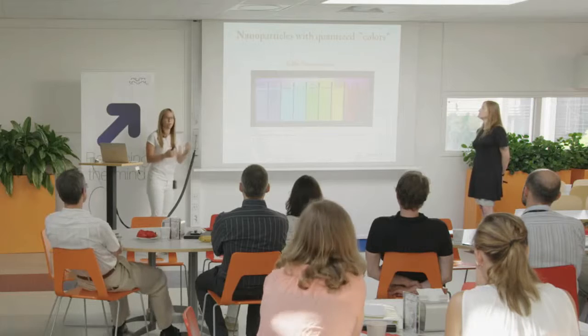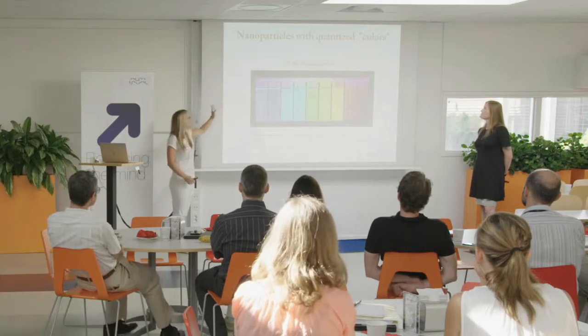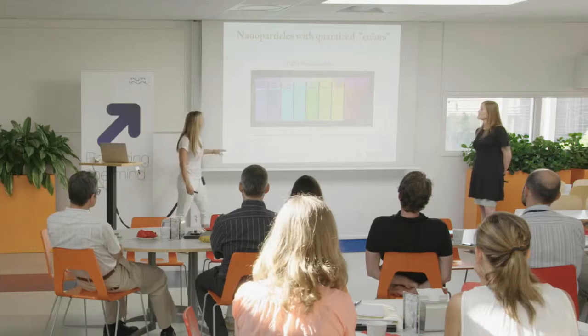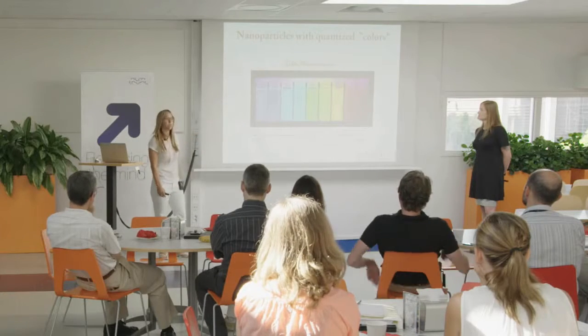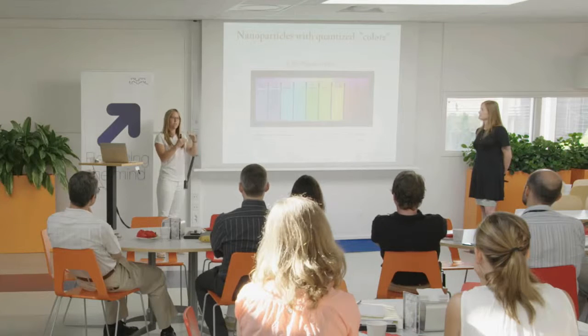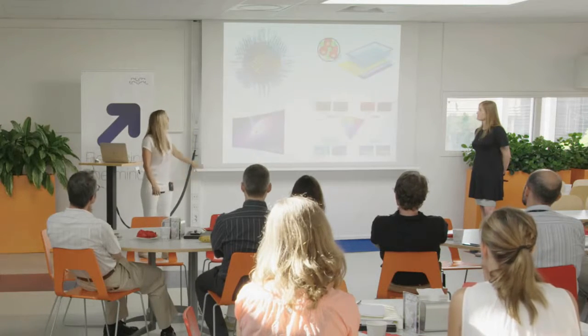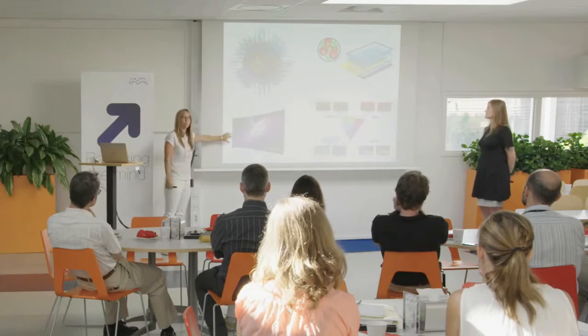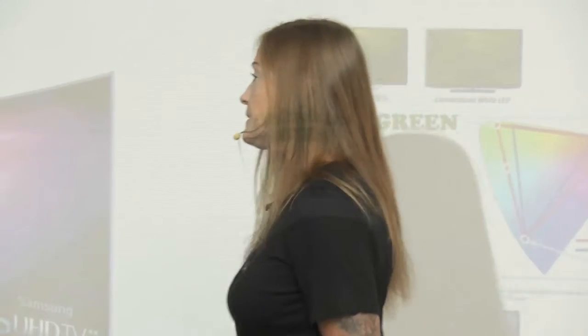Quantum dots are really small nanoparticles. Here we see cadmium selenide — just by changing the diameter of these particles between two and six nanometers, you can produce all of these different colors. Each color is very, very defined and sharp. And that's what they use in the so-called quantum dot TV. It's really awesome.